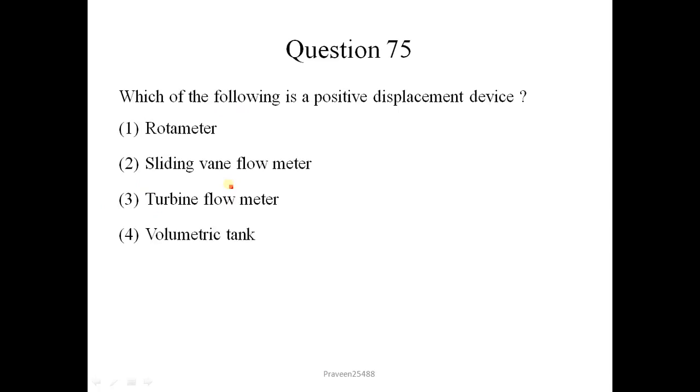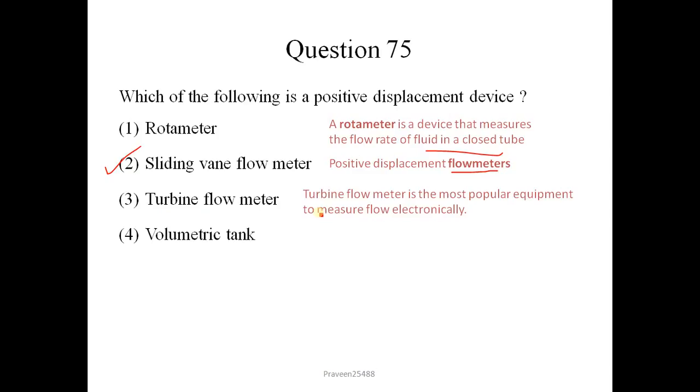Next question is which of the following is a positive displacement device? One moment I will explain this device. Rotameter is a device that measures the flow rate of fluid in a closed tube. Sliding vane flow meter is known as the positive displacement flow meter. Turbine flow meter is the most popular equipment to measure the flow electronically. And there is a volumetric tank to measure the volume of the fluid in the tank. Here correct option is 2.